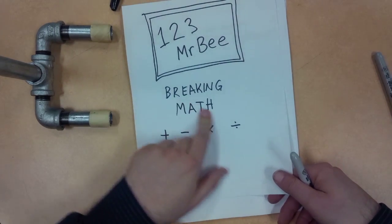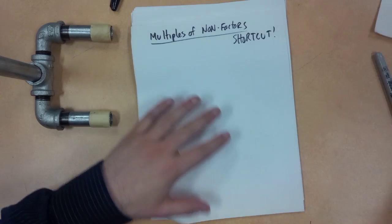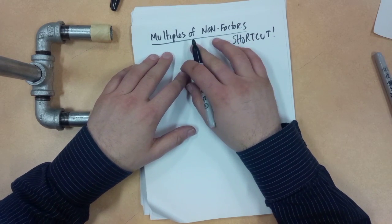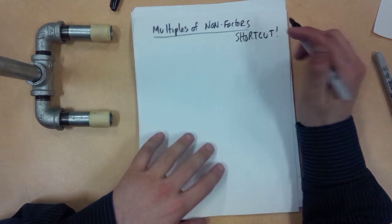Hey everybody, it's 1, 2, 3, Mr. B here doing some breaking math. This is about factors, finding factors, working on multiples of non-factors. Now this is a beautiful little shortcut that I love to use here.